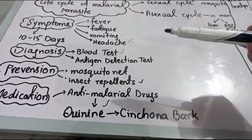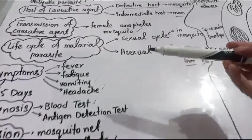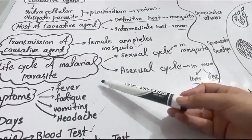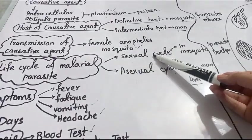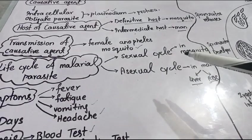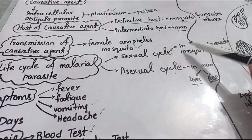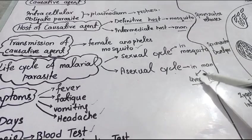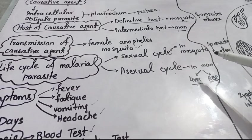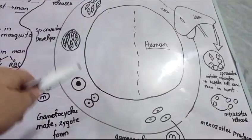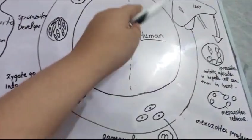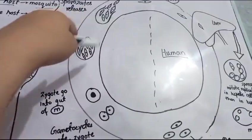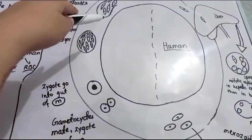Now, after discussing the whole information about malaria, I want to share about the life cycle of the malaria parasite — both the cycle occurring inside the human, inside the liver and red blood cells, and the cycle occurring inside the mosquito. This diagram represents all the things happening inside the human and inside the mosquito.